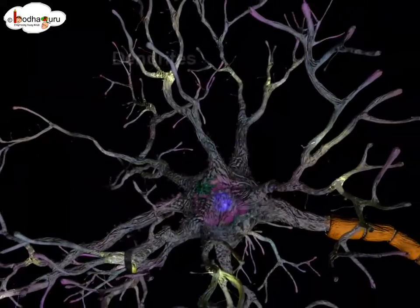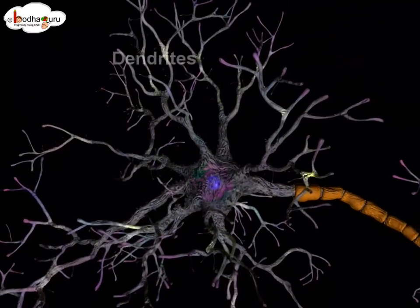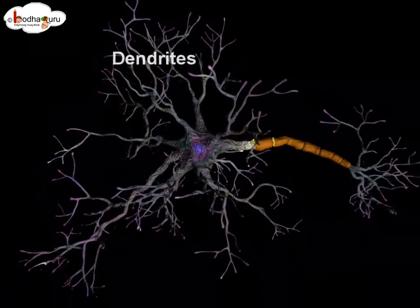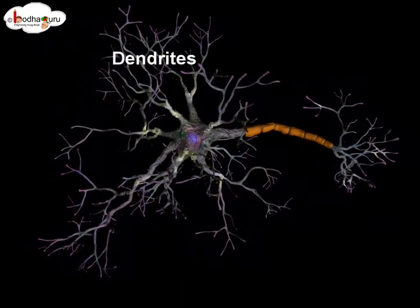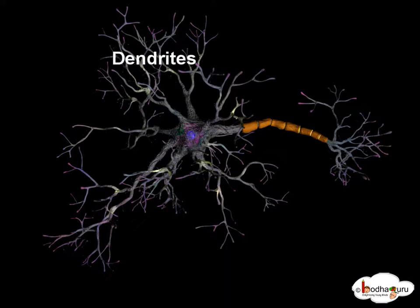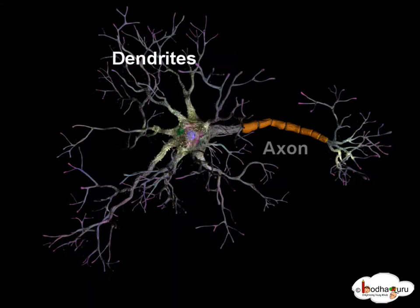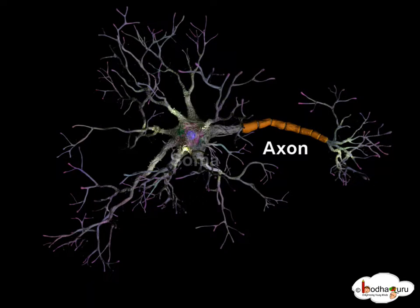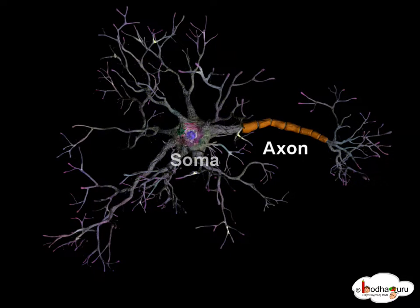There are many branch extensions here — the dendrites, which receive impulses — and the long cable-like extension is the axon, which carries signals away from the soma, generally to the next neuron.